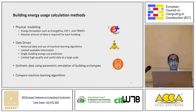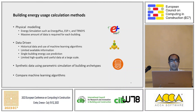We can use machine learning techniques with limited information to predict building energy performance, but we need high-quality data to develop an accurate model. So in this research, we combine both approaches: we generate synthetic data using parametric simulation of building archetypes, and then apply machine learning algorithms to develop an accurate model.